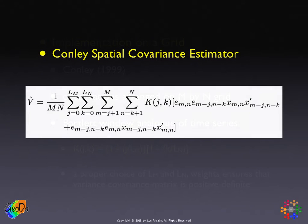The resulting spatial covariance estimator is a quadruple sum, but it's not that complicated. The K term represents the Bartlett weights, which ensure cross-products are down-weighted as locations are further apart. There is also a cutoff beyond a particular distance. Everything else is the same: cross-products of residuals and variable observations for pairs of locations at a given distance on the grid.